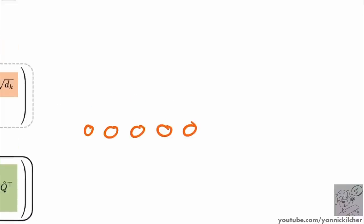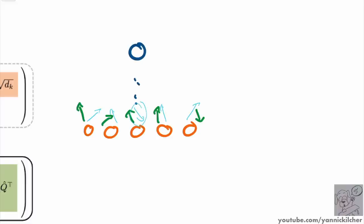Each sequence element exposes a query vector — which says what it wants to know about other tokens — and a key vector, which says what's contained in that token. Each query is compared to each key, and information is routed according to which pairs have the largest inner product. For example, this token's query might only match this particular key, so we'd expect a strong connection between those two.